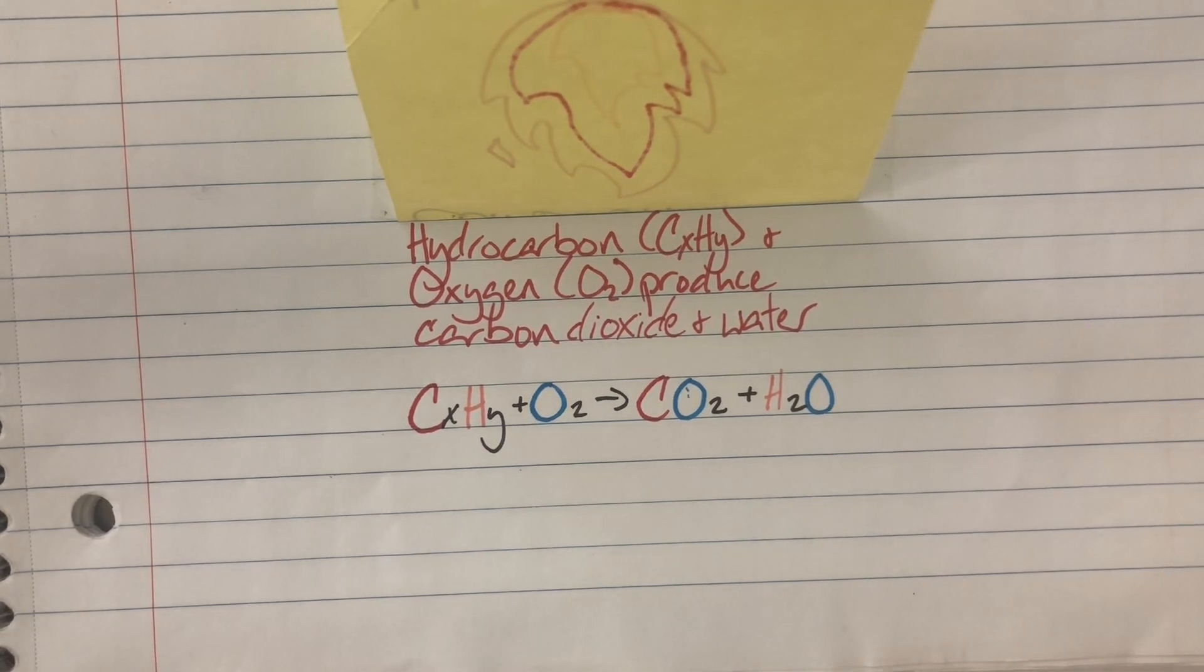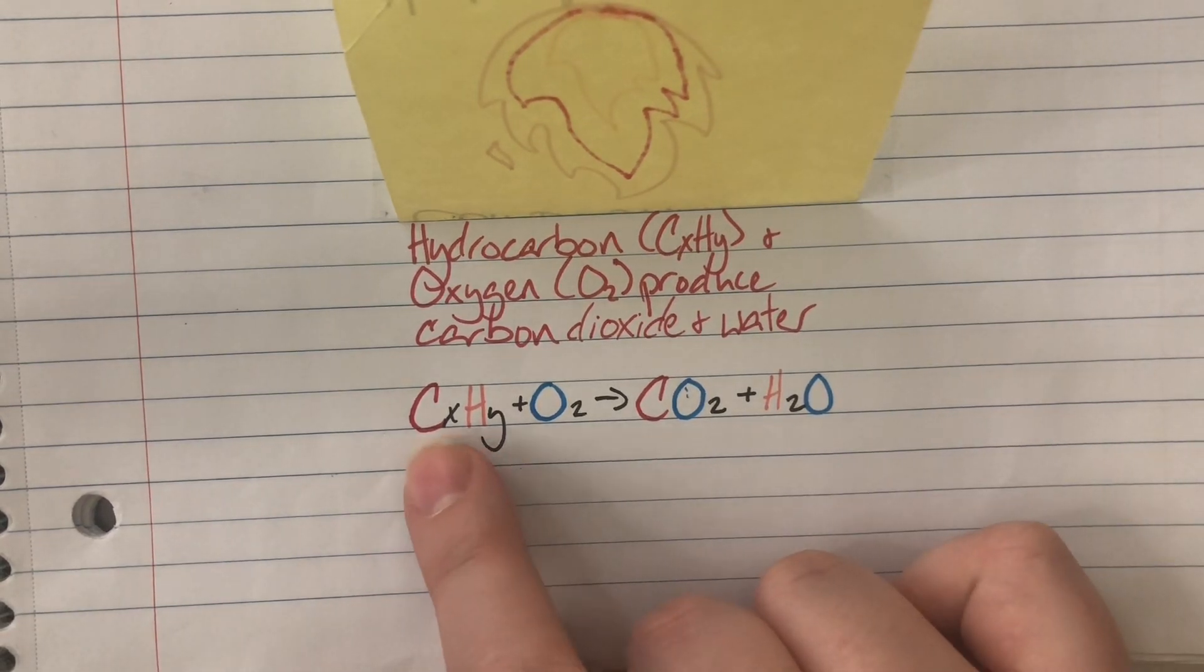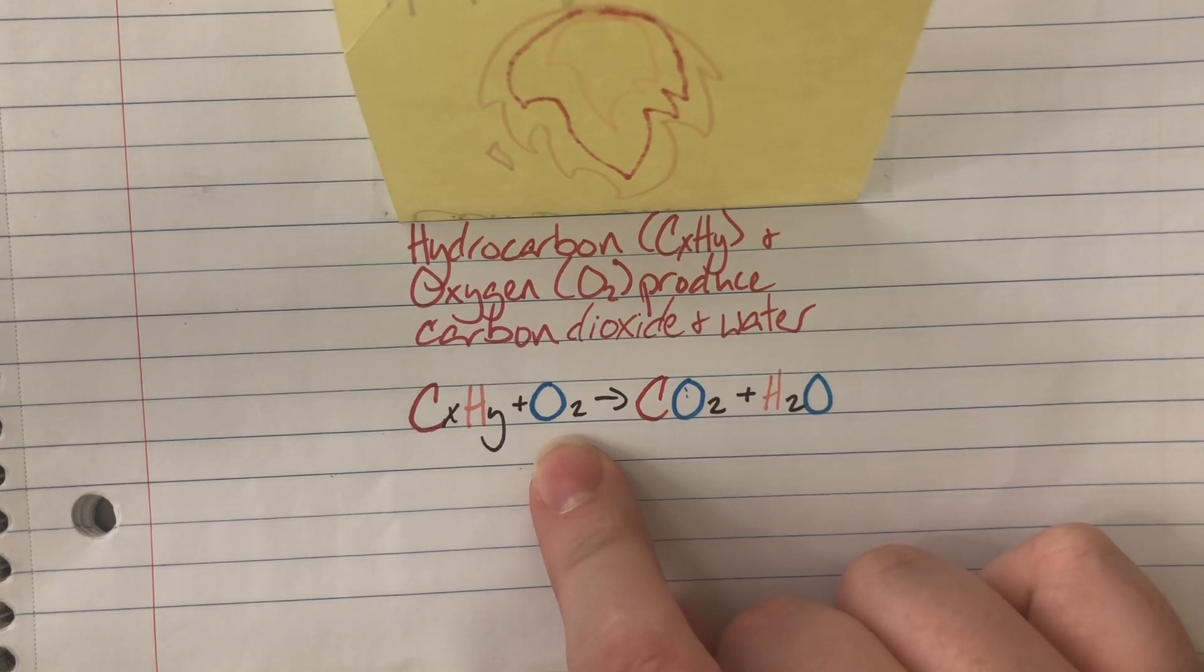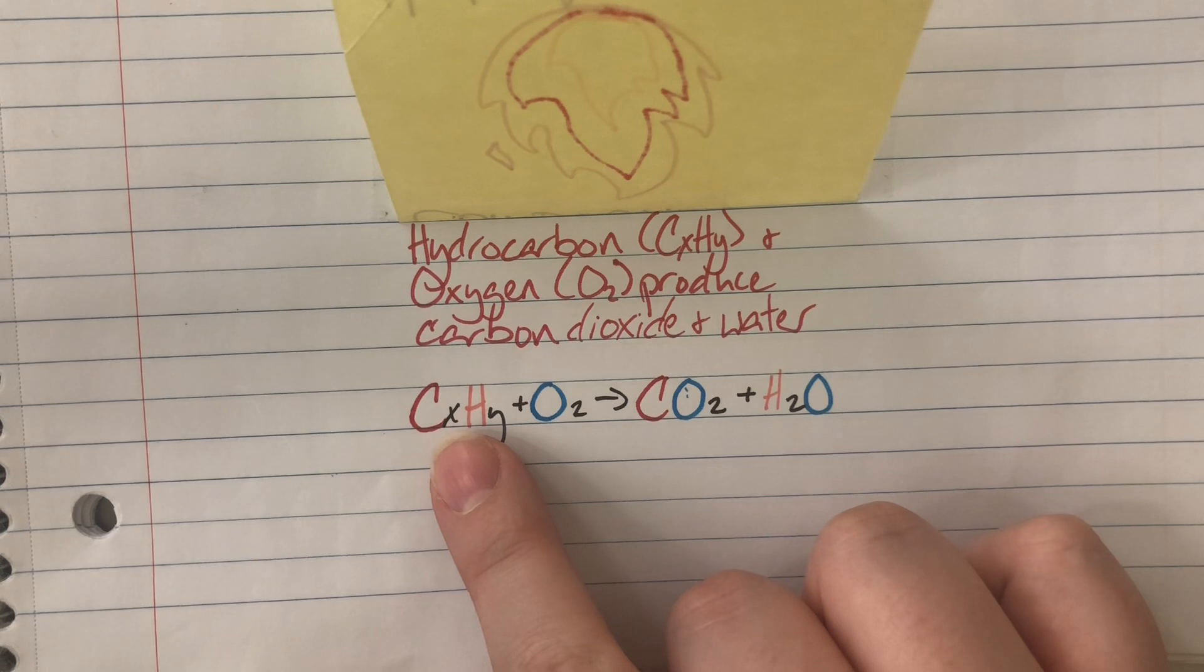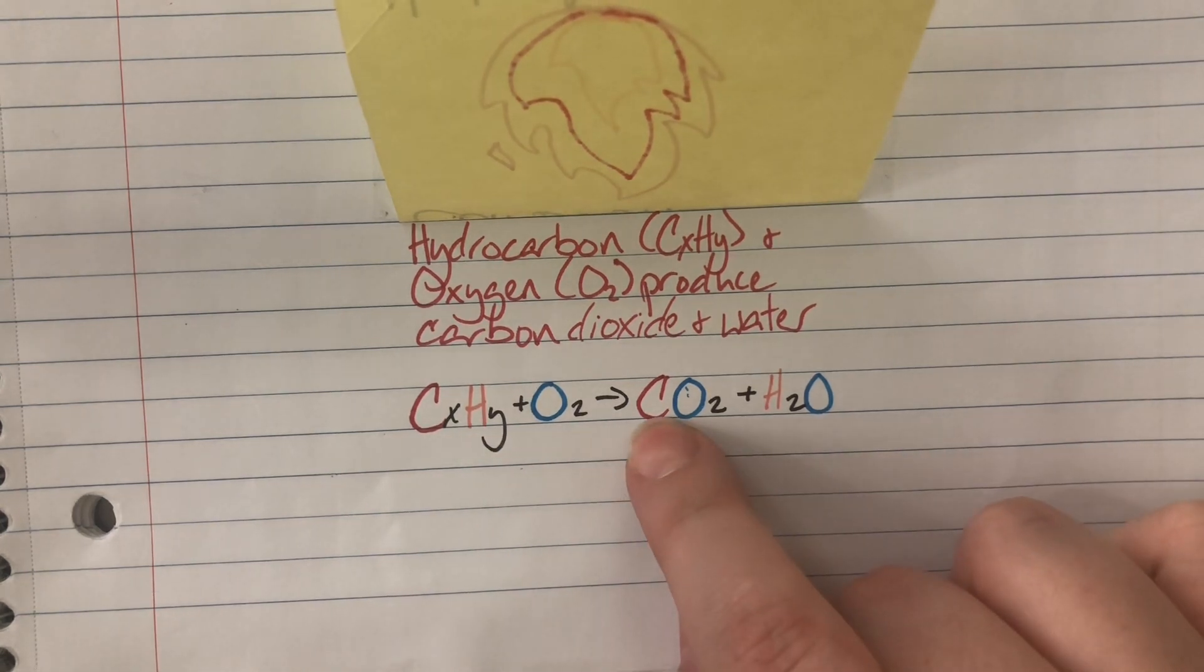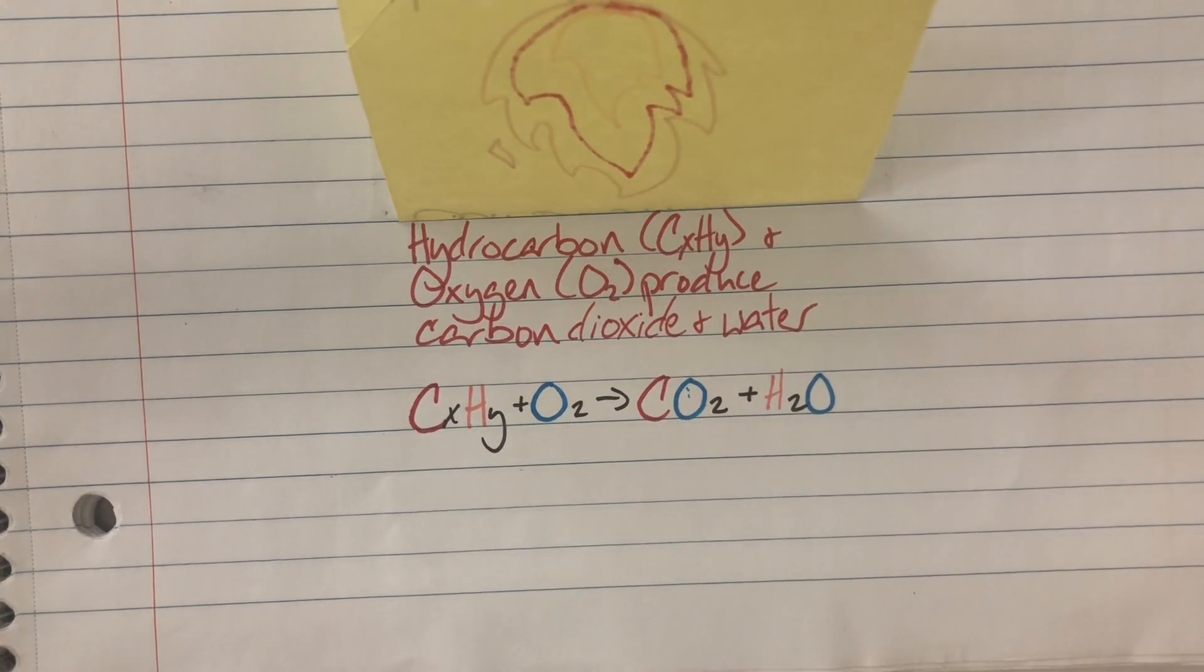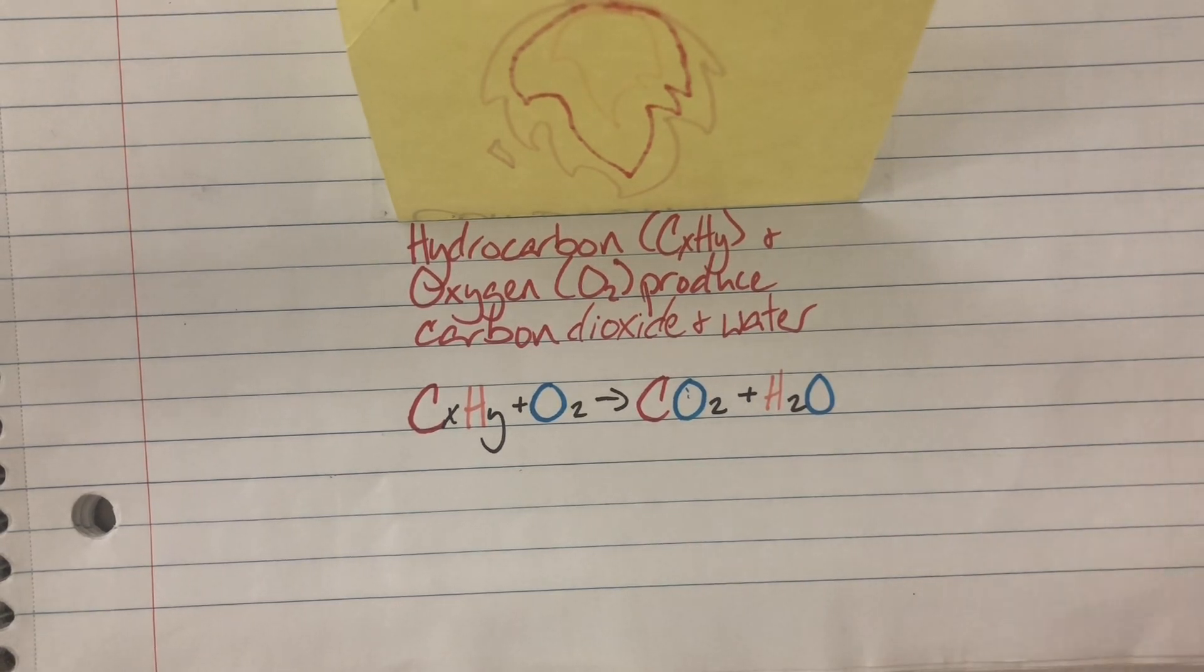But keeping along with the relationship analogies we have a hydrocarbon. So carbon and hydrogen are dating and then oxygen gets introduced. Oxygen breaks up the initial relationship of the hydrocarbon and gets with both carbon and hydrogen. Which is why I call this a hot mess reaction. Because oxygen is a hot mess breaking up a couple and then forming compounds with both of them. And that is our types of reactions.